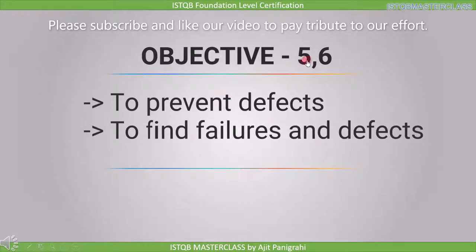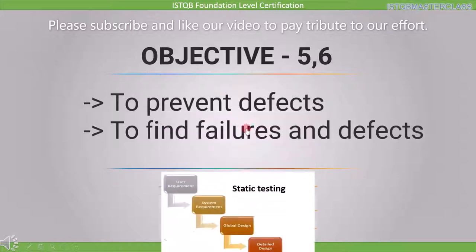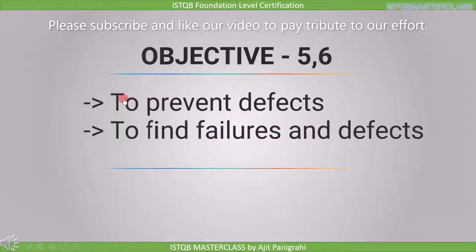Objectives 5 and 6 are discussed together. Objective 5 is to prevent defects, and objective 6 is to find failures and defects. If you find a defect in the requirement stage, you prevent it from going to the next stage. We need to find defects or failures in the same stage in which they are tested, otherwise defects travel to the next stage and become more costly to fix. This is one of the important objectives of testing — to prevent defects and to find failures and defects.